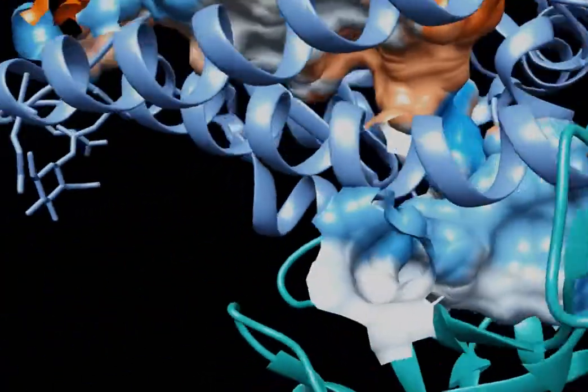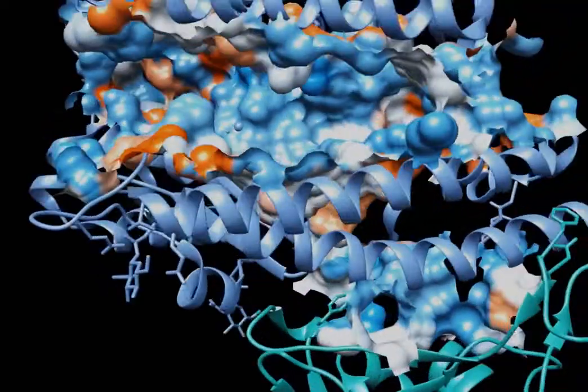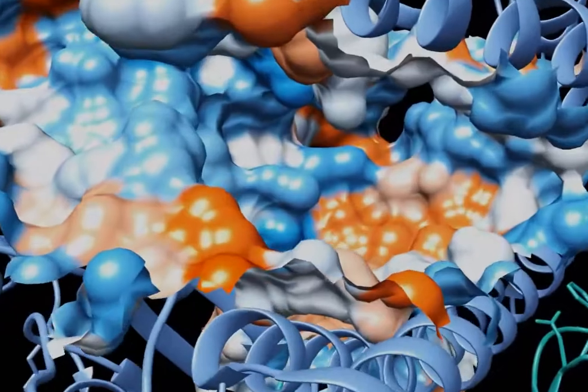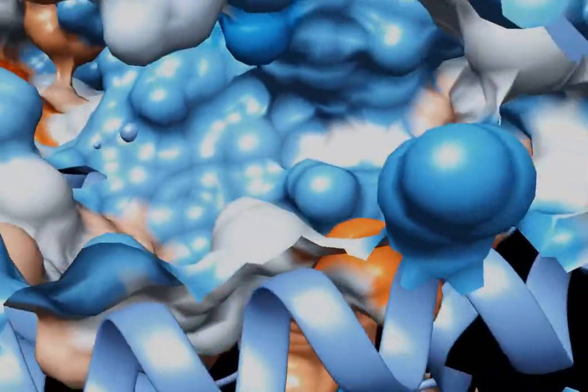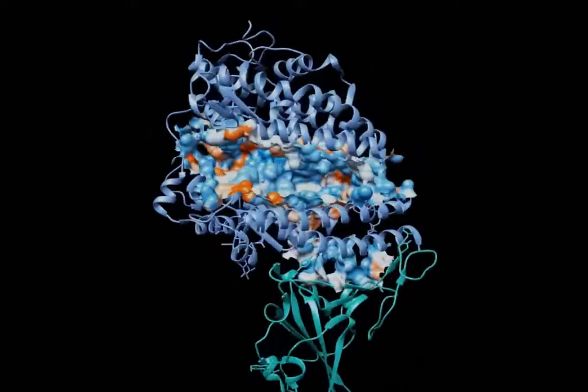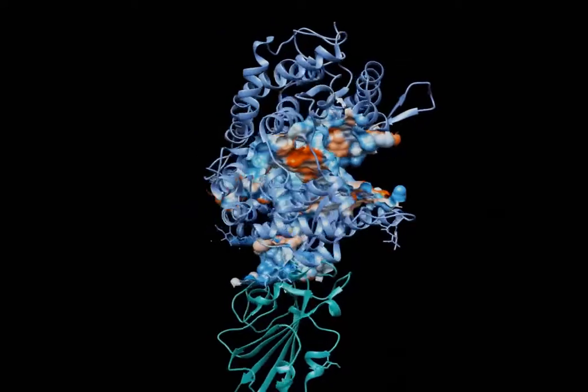You can also look at the top part of the ACE2 protein, where there is a large and complex pocket. This is the enzymatic site of the ACE2 protein, which can receive a big ligand, the angiotensin 2, which is a mediator of hypertension.